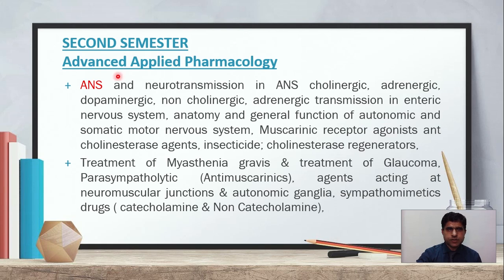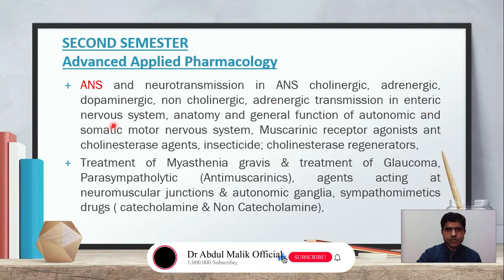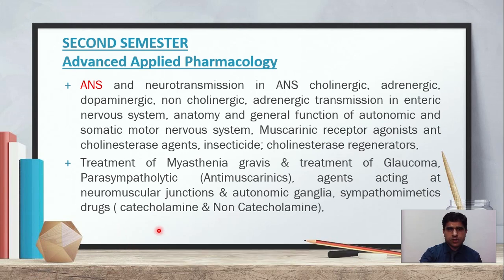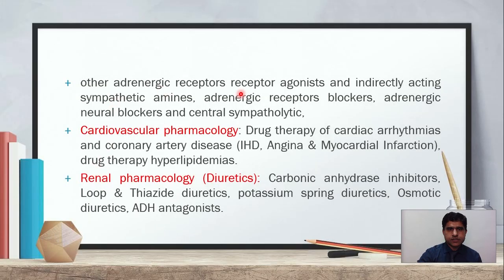The first subject, Advanced Applied Pharmacology, covers the autonomic nervous system and neurotransmission, including ANS cholinergic, adrenergic, dopaminergic, non-cholinergic adrenergic transmission, and enteric nervous system. Topics include anatomy and general function of autonomic and somatic motor nervous system, muscarinic receptor agonists, anticholinesterase agents, insecticides, cholinesterase regenerators, treatment of myasthenia gravis, treatment of glaucoma, parasympatholytic anti-muscarinics, agents acting at neuromuscular junctions and autonomic ganglia, sympathomimetic drugs with catecholamines and non-catecholamines, adrenergic receptor agonists, indirectly acting sympathetic amines, adrenergic receptor blockers, adrenergic neural blockers, and central sympatholytics.